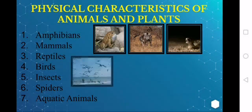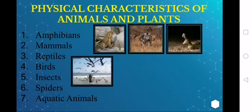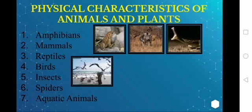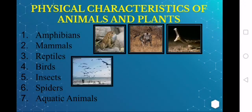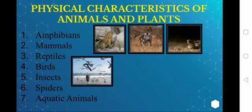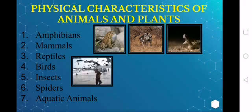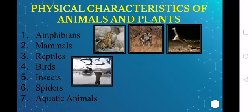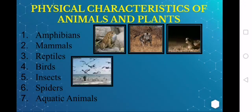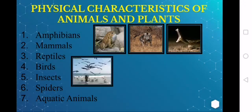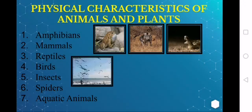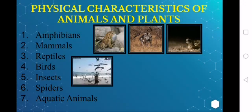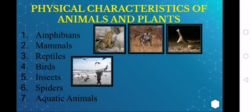Birds — their body is covered by feathers. They are warm-blooded. Examples include duck and sparrow. They have a backbone and they lay eggs.